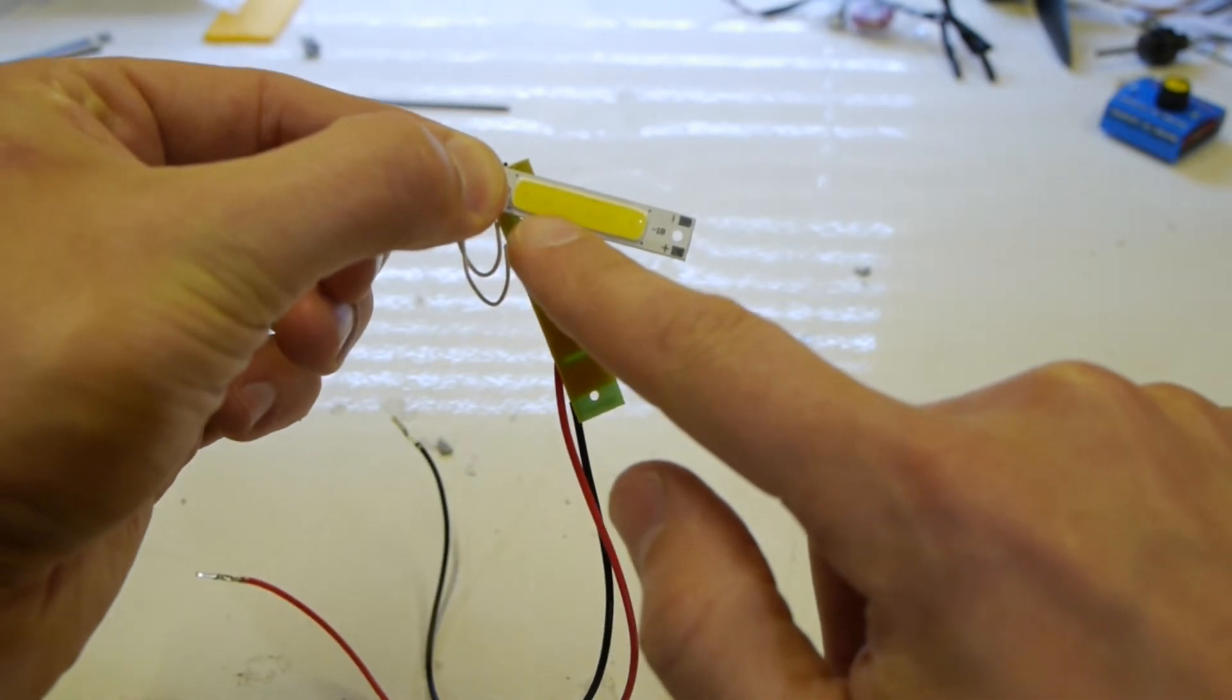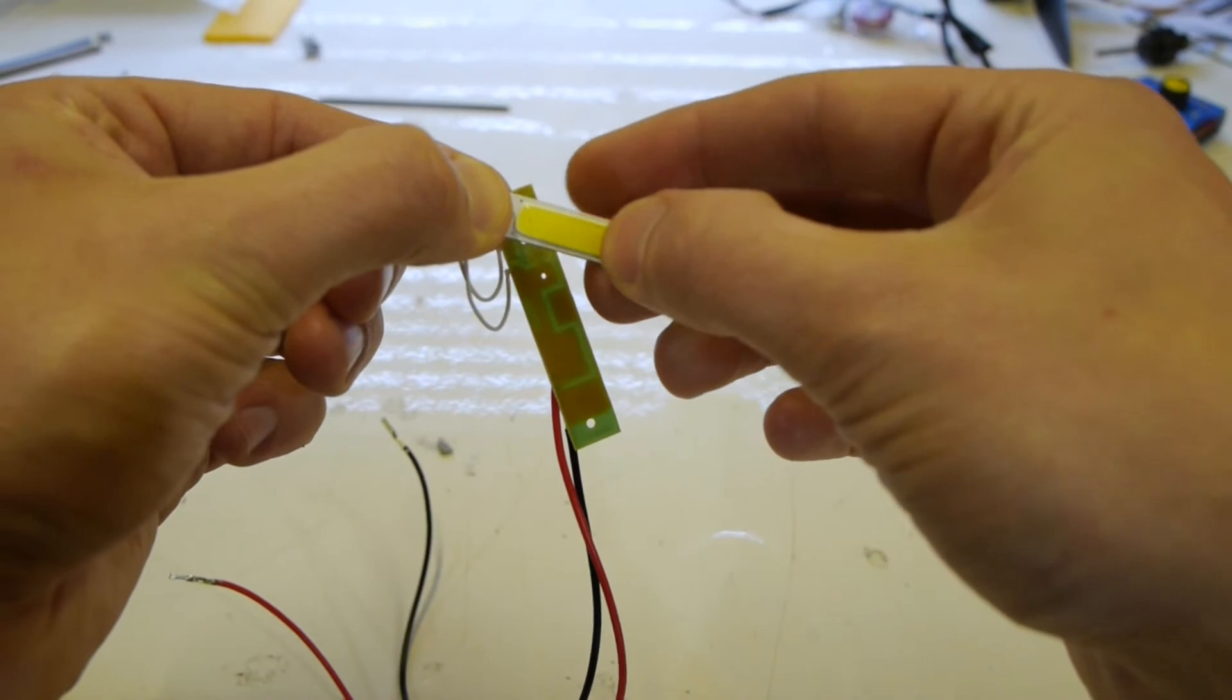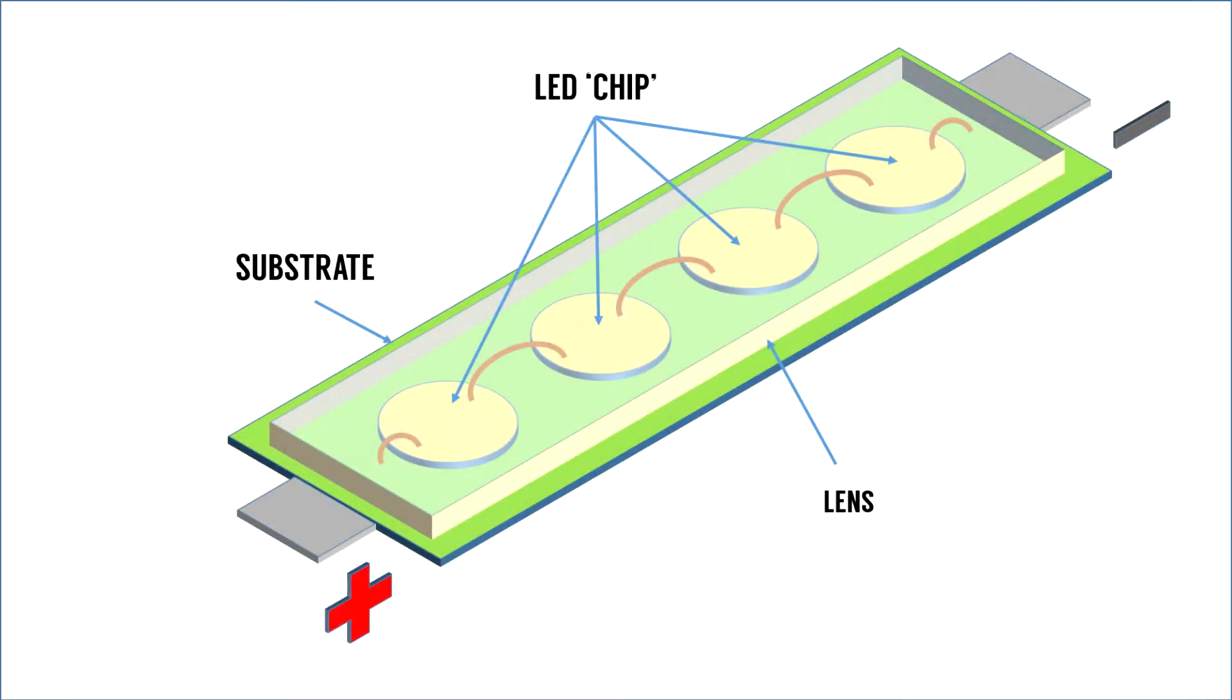And they're covered by the one lens effectively to distribute the light evenly.